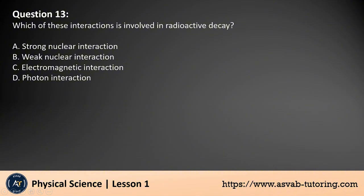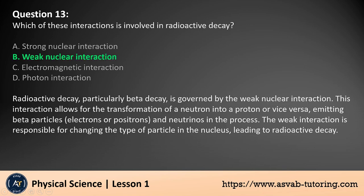Question 13: Which of these interactions is involved in radioactive decay? A. Strong nuclear interaction, B. Weak nuclear interaction, C. Electromagnetic interaction, D. Photon interaction. The answer is B. Radioactive decay, particularly beta decay, is governed by the weak nuclear interaction. This interaction allows for the transformation of a neutron into a proton or vice versa, emitting beta particles, which are electrons or positrons, and neutrinos in the process. The weak interaction is responsible for changing the type of particle in the nucleus, leading to radioactive decay.